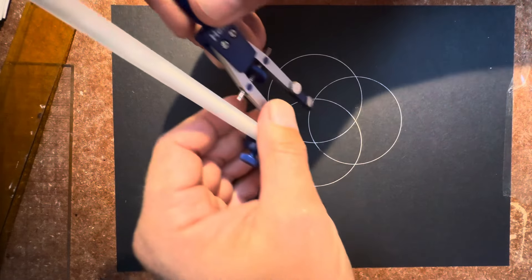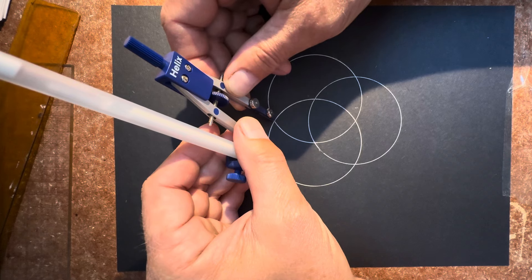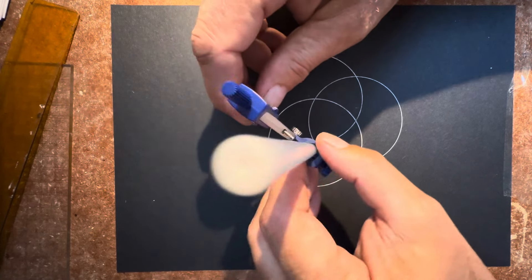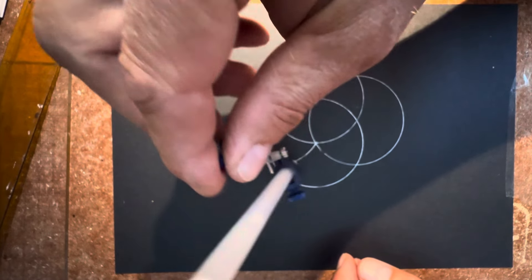You then need to look for the point where they join and draw a fourth circle.